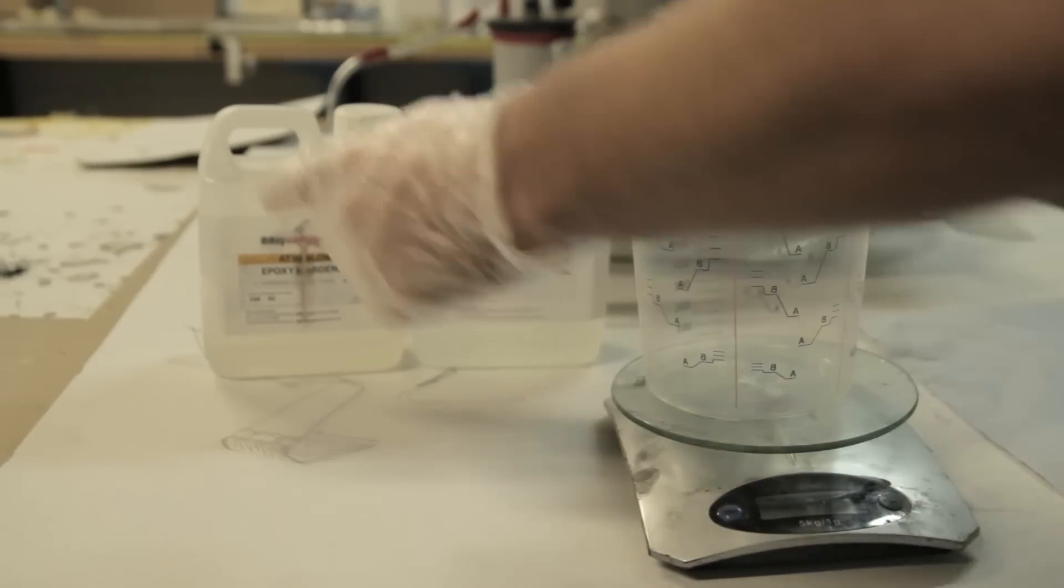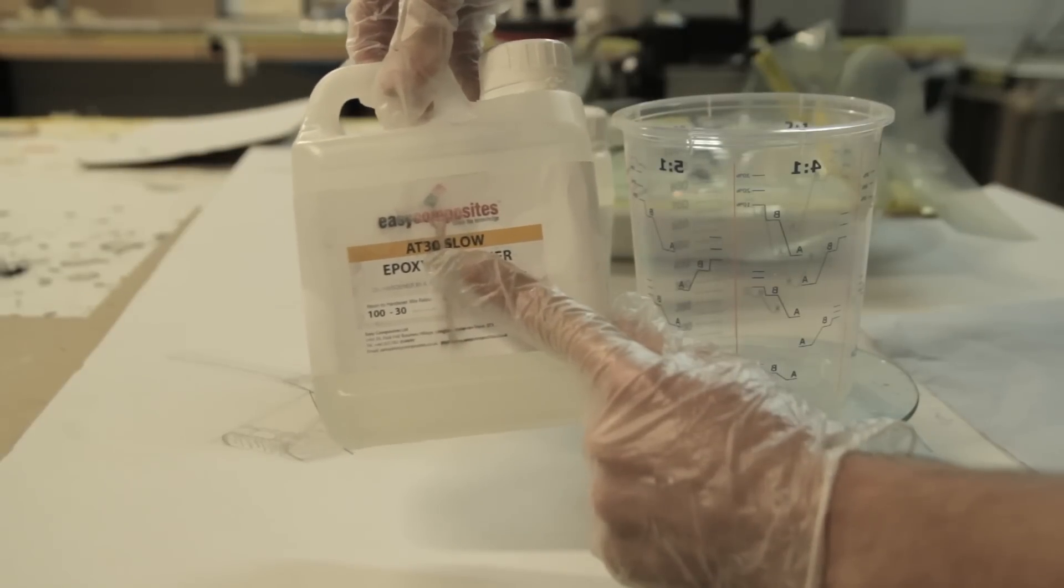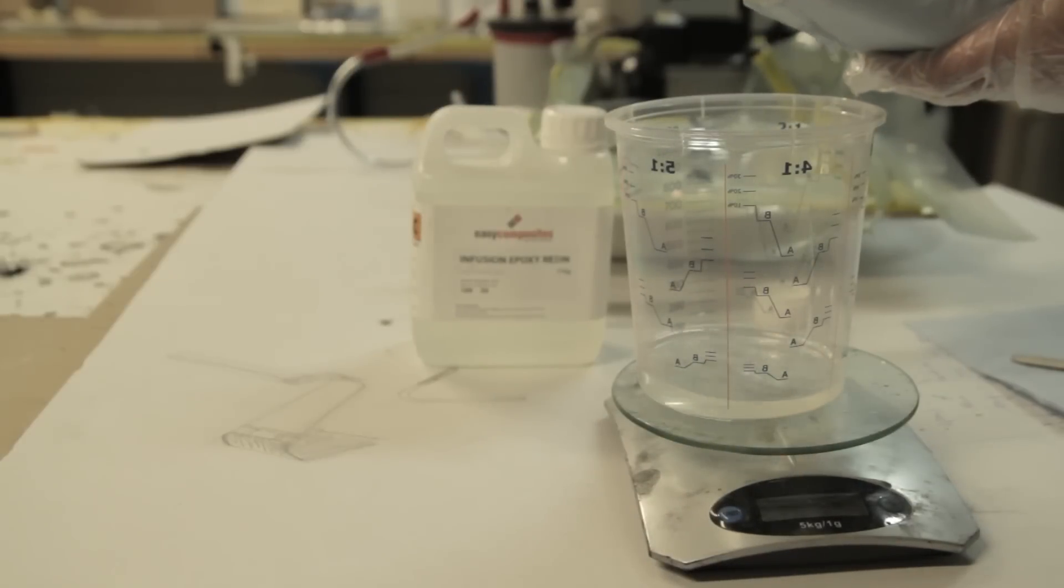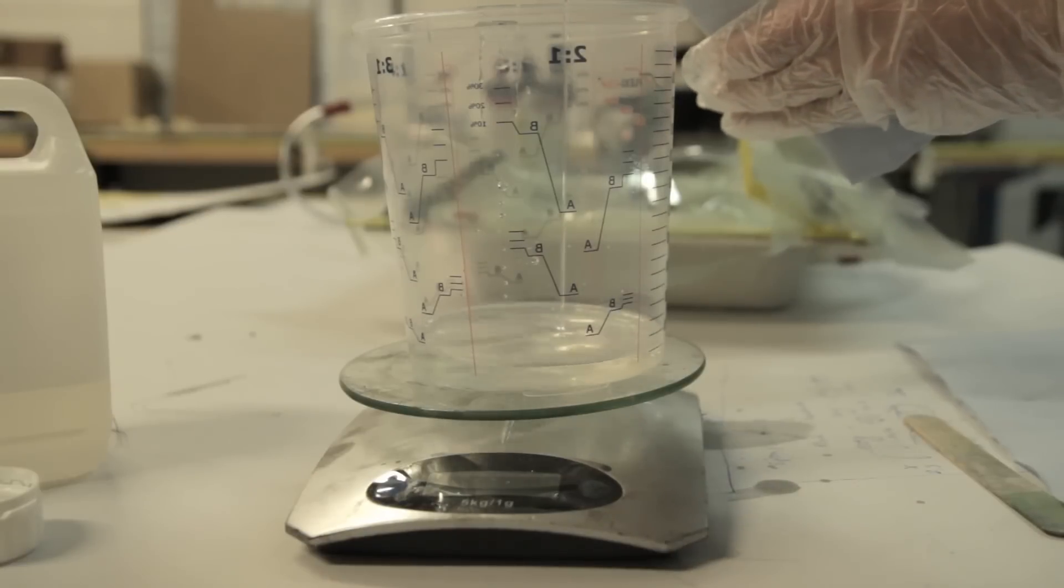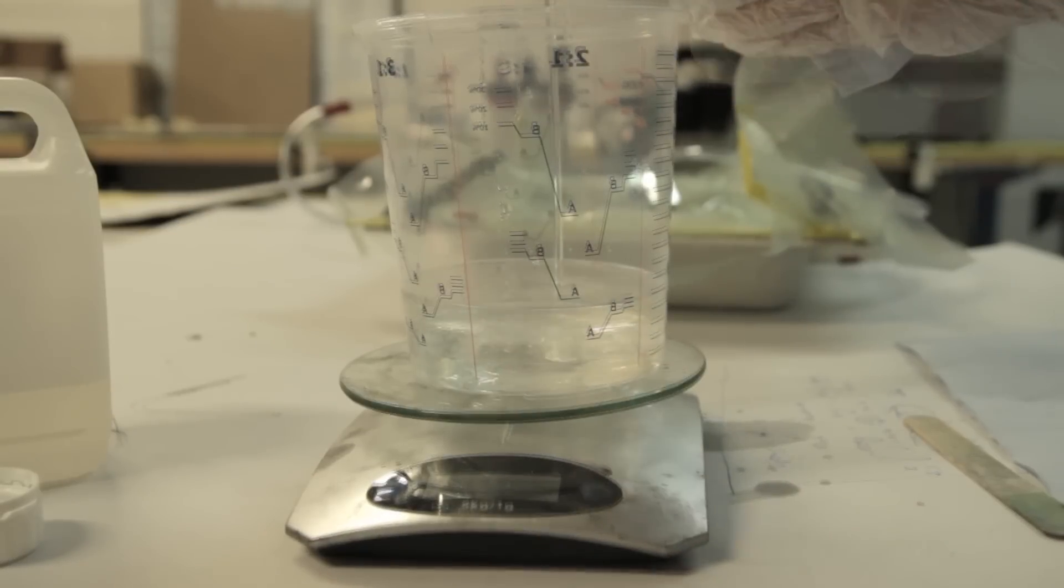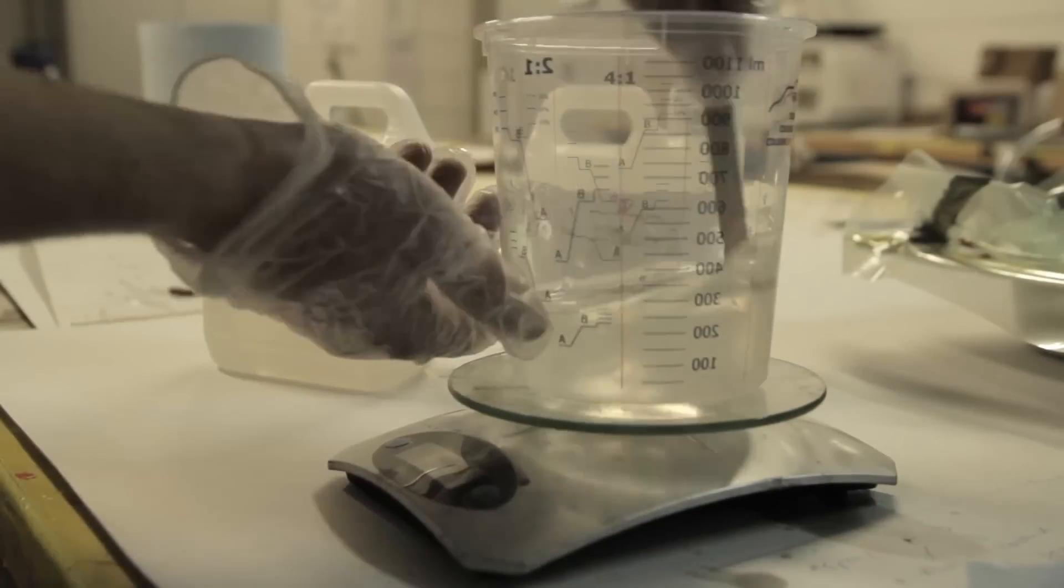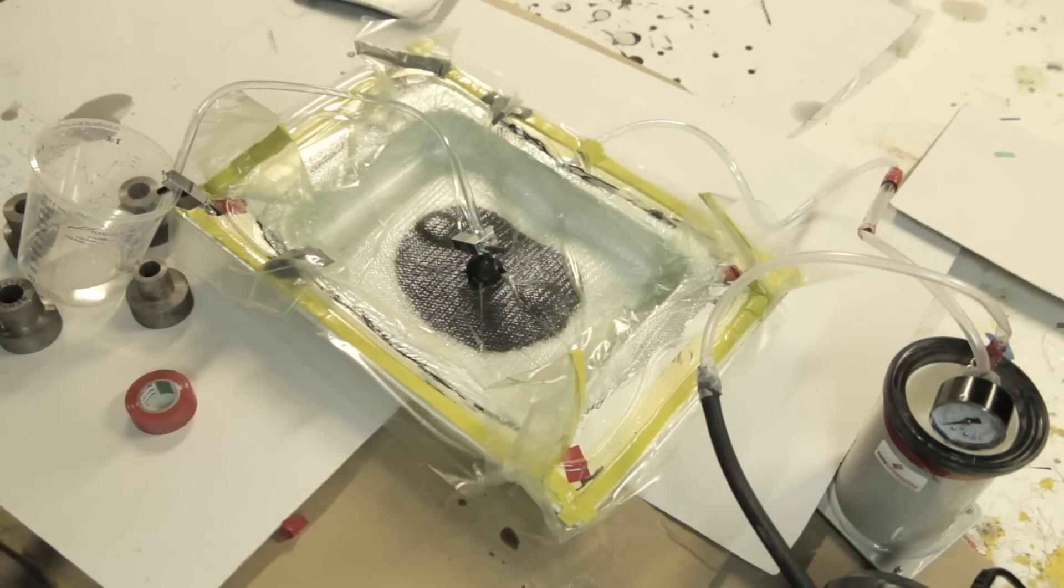Here is the resin system I'm using - the Easy Composites infusion resin. It's 30 percent of hardener. Actually, it's not 30 percent, it's you add 30 to 100. So if you're mixing 100 of A, you add 30 of B.